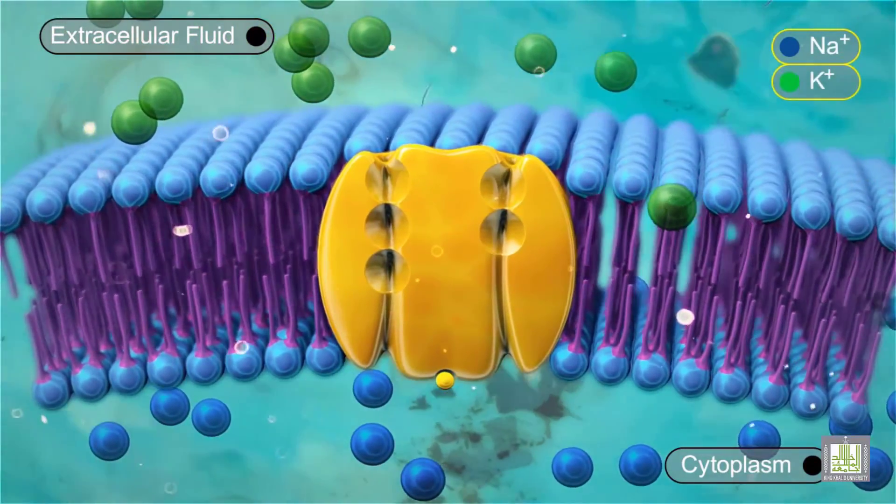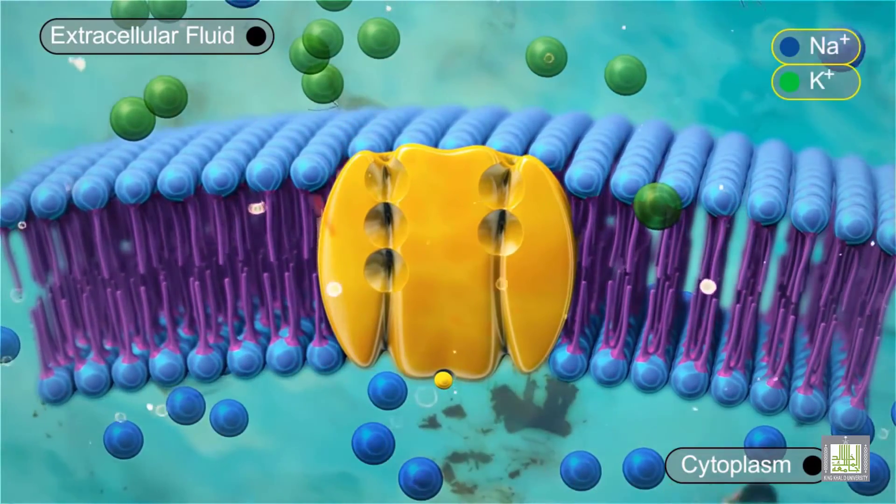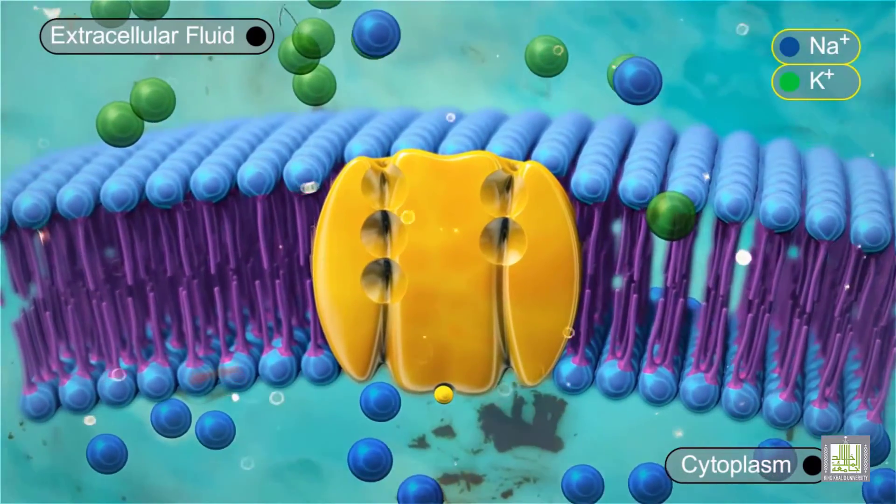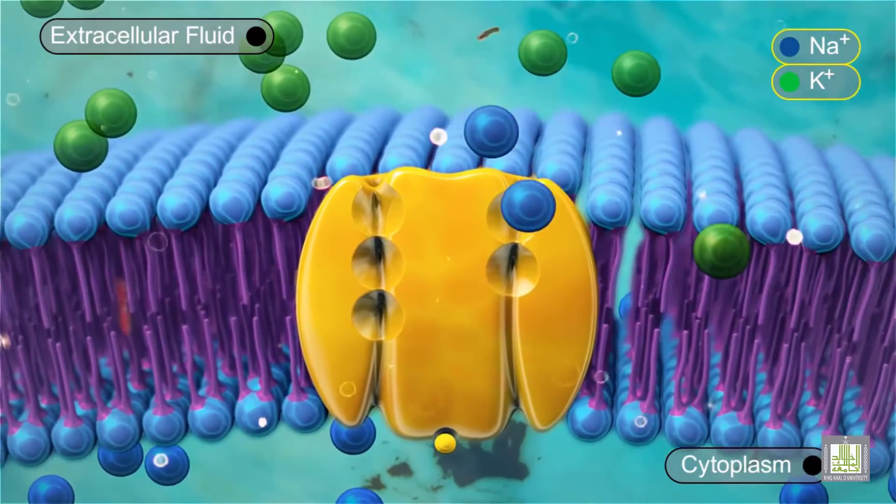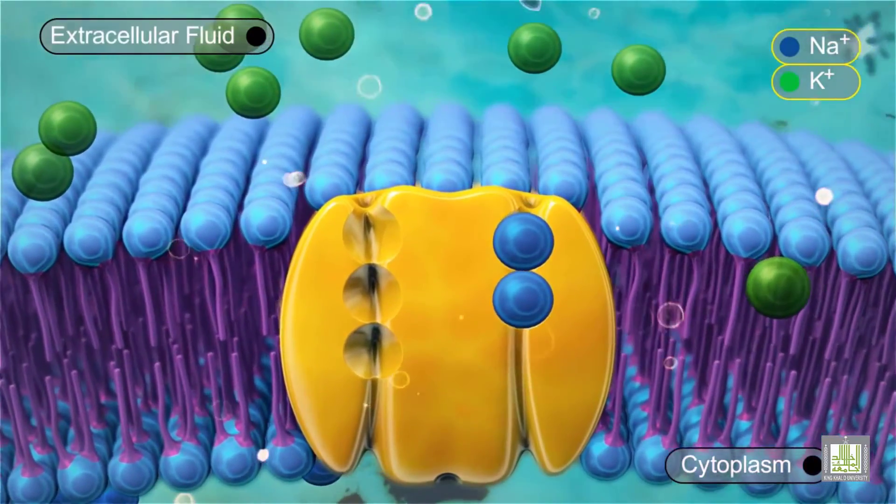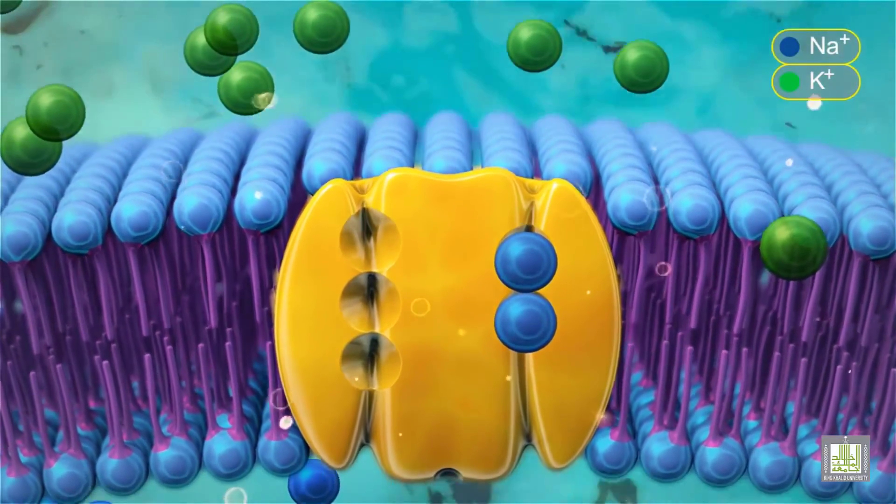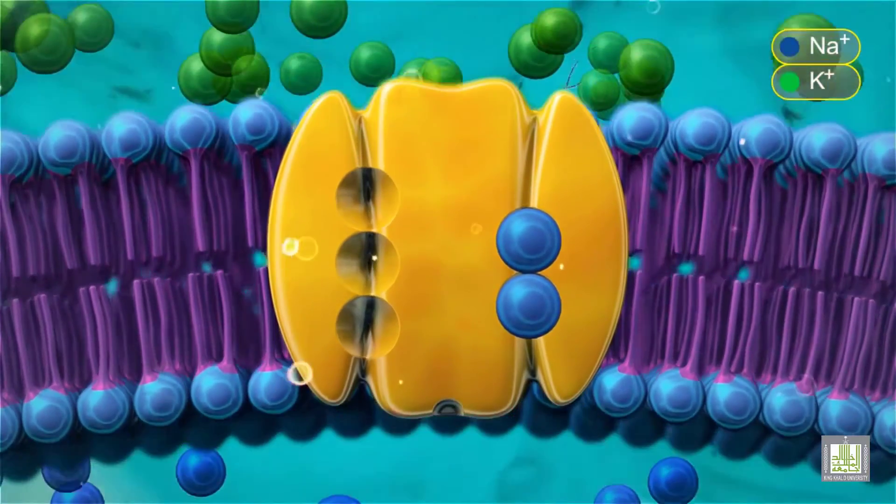The phosphate attached to the carrier protein is released. The carrier protein changes shape again, reverting to its original conformation and delivering the potassium ions across the membrane to the inside of the cell.